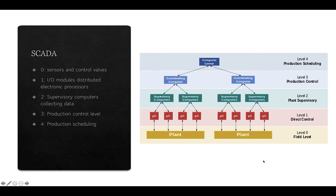SCADA operates on different layers, starting with the field level, level zero, where the sensors and control valves operate. Controlling those are input-output modules and distributed electronic processes. Then followed by supervisory computers collecting data, followed by the production control level with coordinating computers, and then production scheduling at the computer center. When looking at these systems and their security, there are all these different elements that need to be considered.